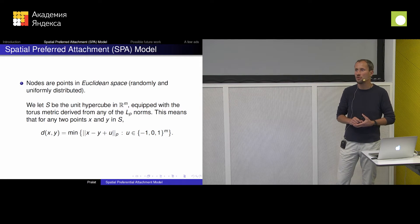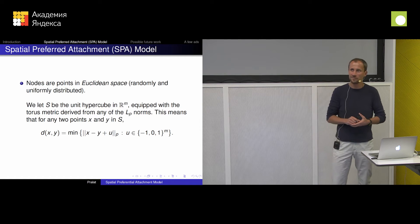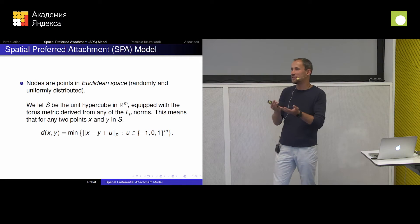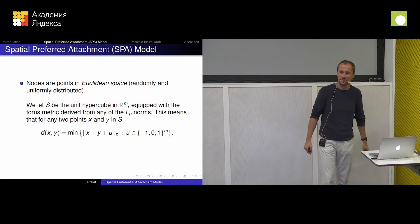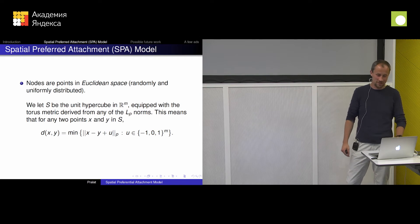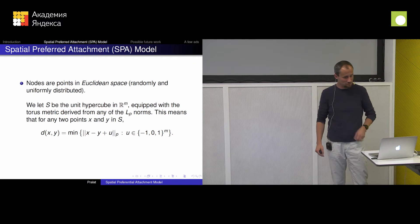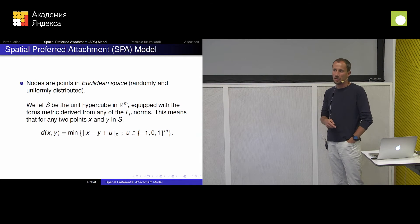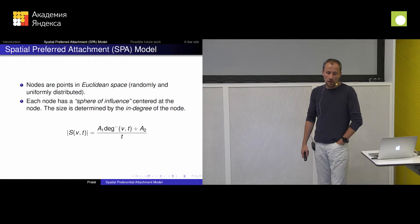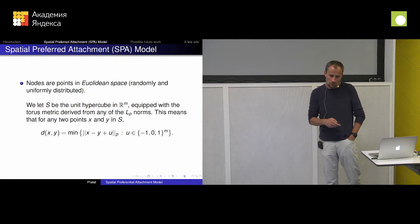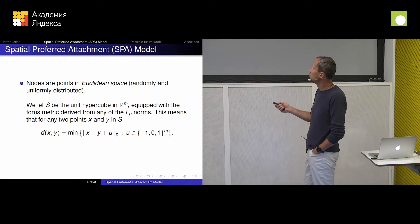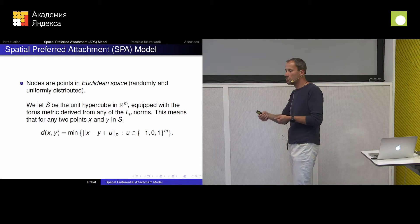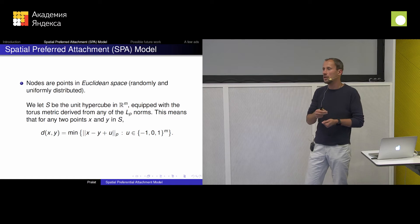Like in North America we say donuts — in Eastern Europe it's probably called something else. It's a torus metric, two-dimensional. With torus metric, it's donut for us. But that's just a technicality — don't worry, it doesn't have to be like that, it's just easier. And then my nodes are sprinkled randomly and uniformly: each time a new user joins the network, it will be placed in that space with uniform probability.